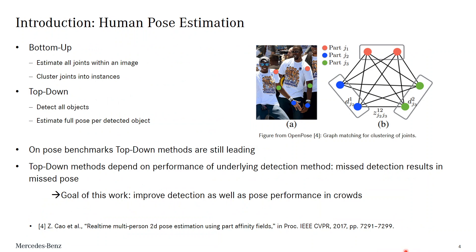There are two main approaches for human pose estimation: bottom-up and top-down. Bottom-up approaches, like the OpenPose method shown here on the right, first detect all joints within an image and then cluster these into instances. OpenPose uses graph-based matching for this clustering. Top-down approaches first detect all objects within an image, for example using a bounding box-based detector, and then estimate the pose for each object by taking an image crop. We follow the top-down approach as these methods are still leading on current benchmarks like MSCOCO. Of course, this approach depends on the performance of the underlying detector — a missed detection will also result in missing pose information.